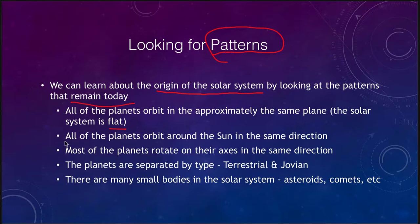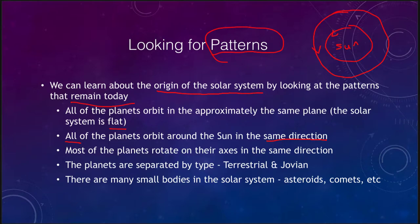We also notice that all of the planets orbit around the sun in the same direction. Every single one goes counterclockwise if we look down from the Earth's north pole. Most, but not all, of the planets also rotate on their axes in the same counterclockwise direction. So not only are they going around the sun in the same direction, but they also rotate in the same direction, which is probably a remnant of the original material that formed the solar system billions of years ago.